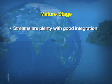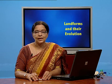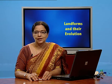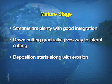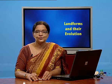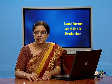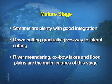In the maturity stage of the river, the streams are plenty with good integration. Unlike the youthful stage, the river does downcutting and gradually gives way to lateral cutting. Deposition starts along with the erosional work. The important features formed under this stage are river meandering, the oxbow lakes, the flood plains, etc.